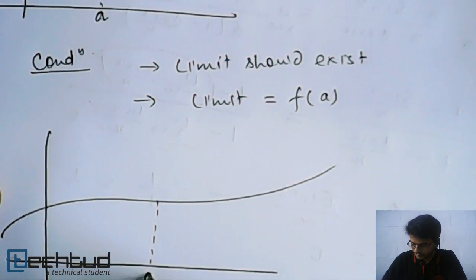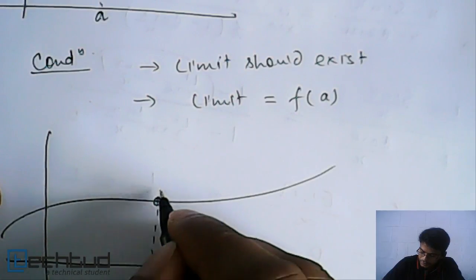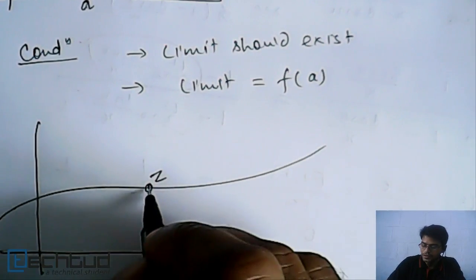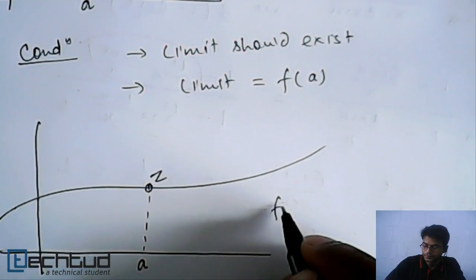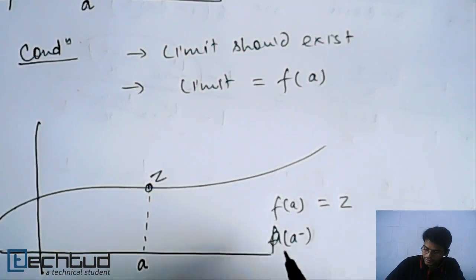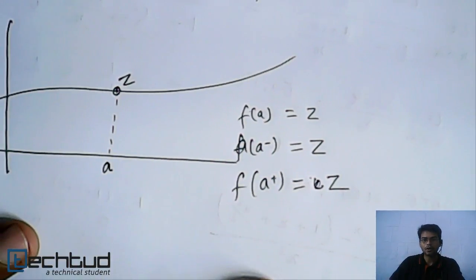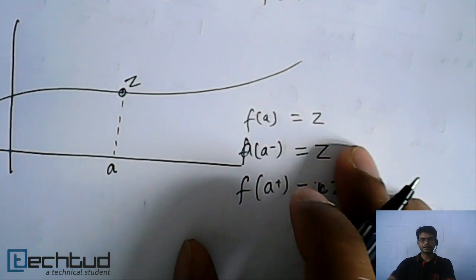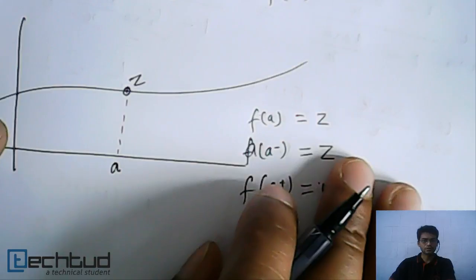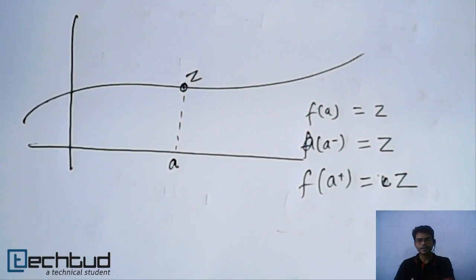If point 'a' is given and the value of f(a) is some particular value — let's say z — then f(a) equals z, the left-hand limit f(a⁻) equals z, and the right-hand limit f(a⁺) also equals z. So the left-hand limit, right-hand limit, and the value at that point itself are all equal. In that case, we can say the limit of this function exists and this function is continuous. There is no break.